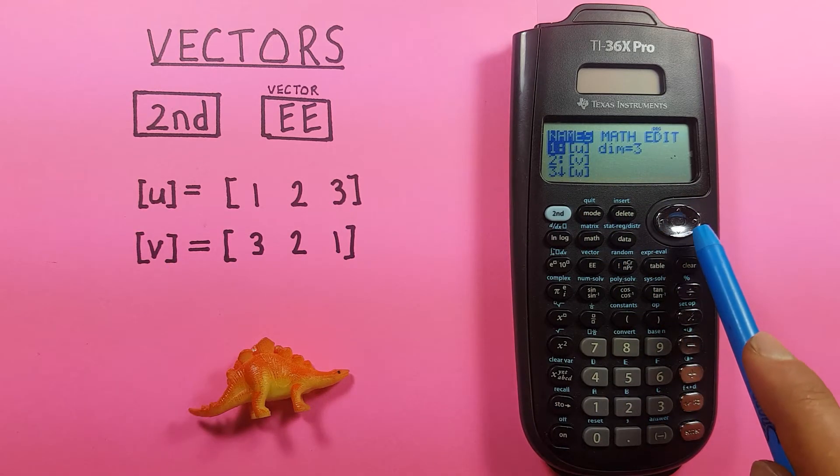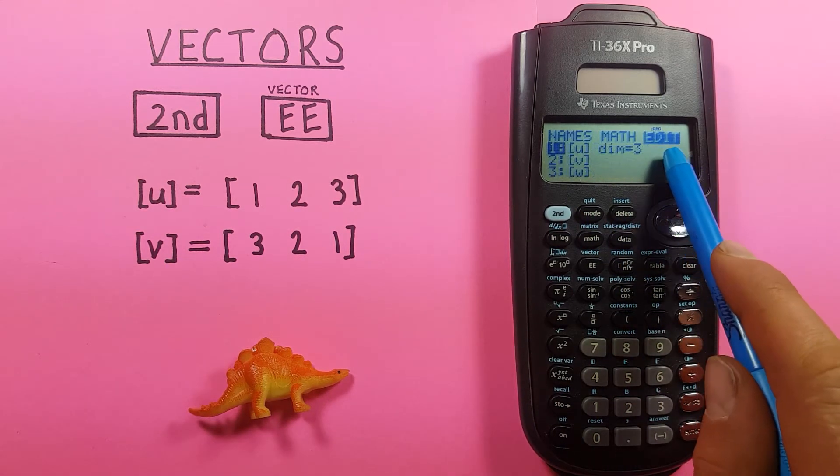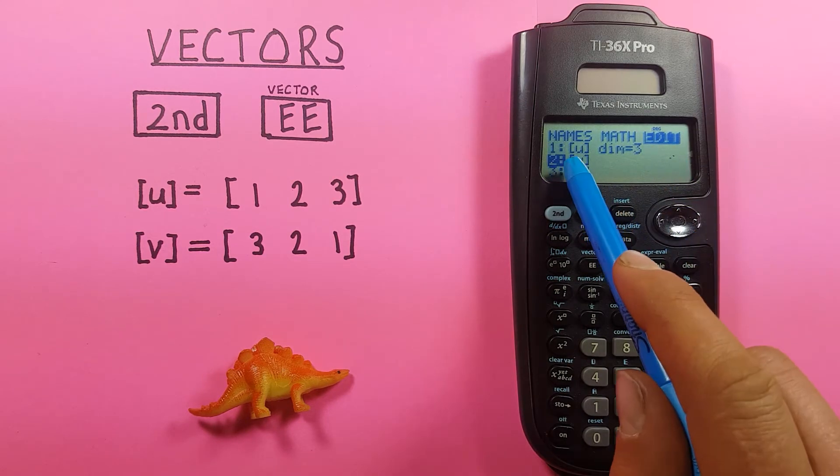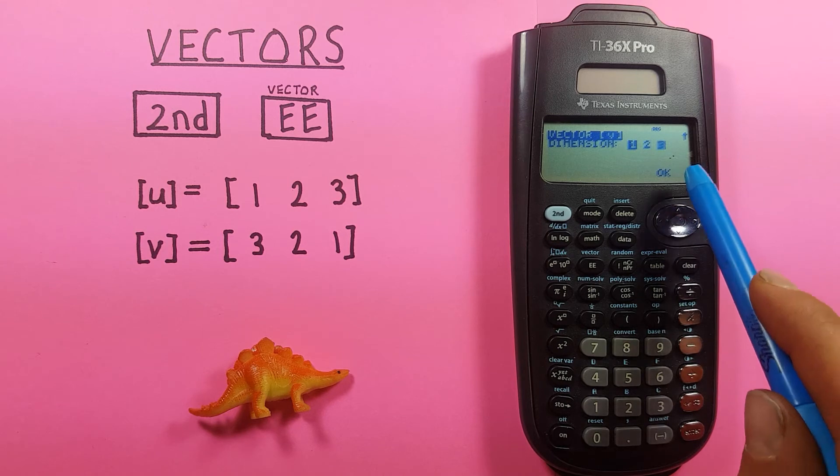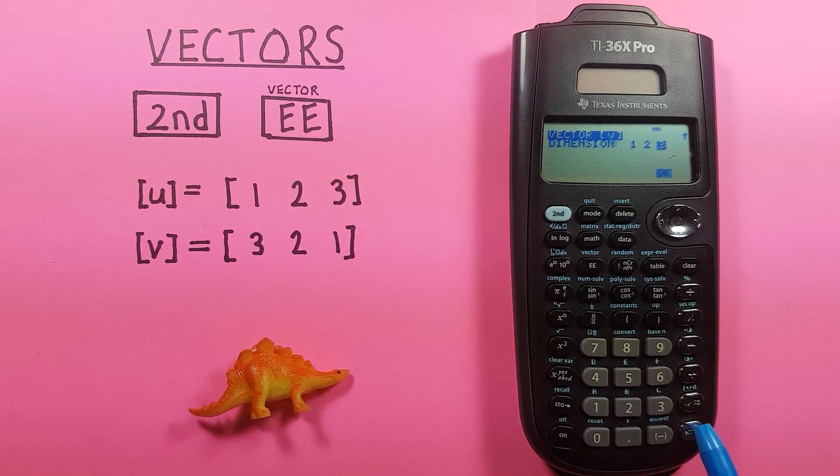So let's enter our V vector. You can go to the right twice to the edit options, down to V, press enter. Again, this is a three-dimensional vector, so we'll highlight the three and press enter twice.